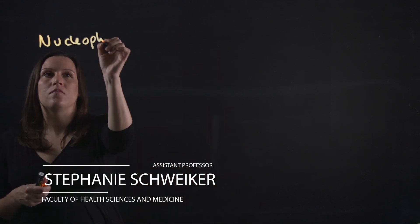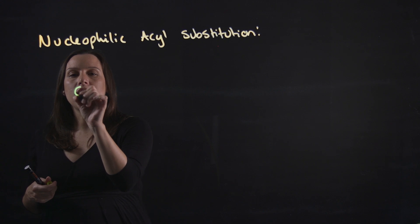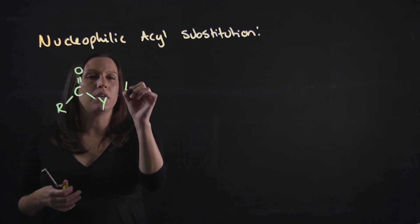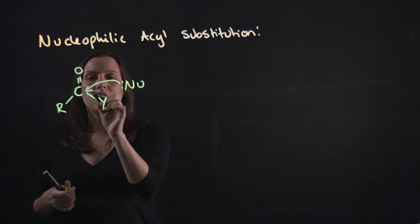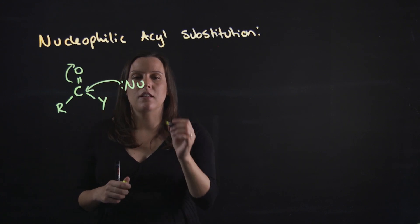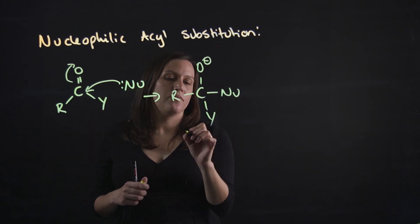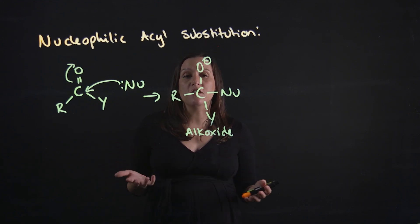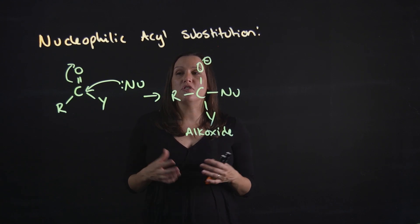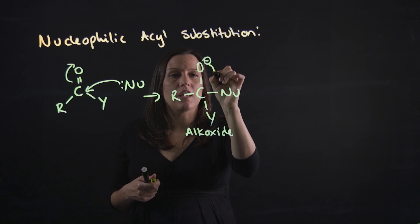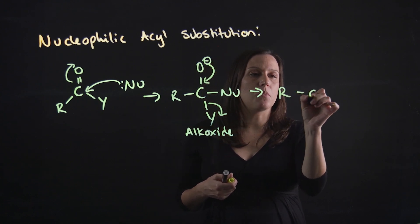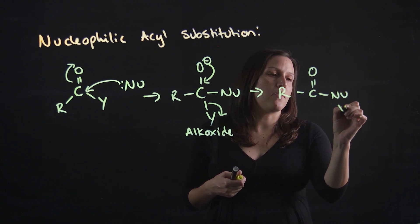This video is about nucleophilic acyl substitution. We have our carbonyl group with a leaving group. A nucleophile comes in and attacks that carbonyl carbon — that delta positive carbon. We break the weakest bond, the second bond going to the oxygen, forming our alkoxide. The difference between substitution and addition: in addition the reaction stops there, but in substitution, the lone pair of electrons kicks back down and the leaving group leaves, retaining the carbonyl functional group, and producing Y minus.